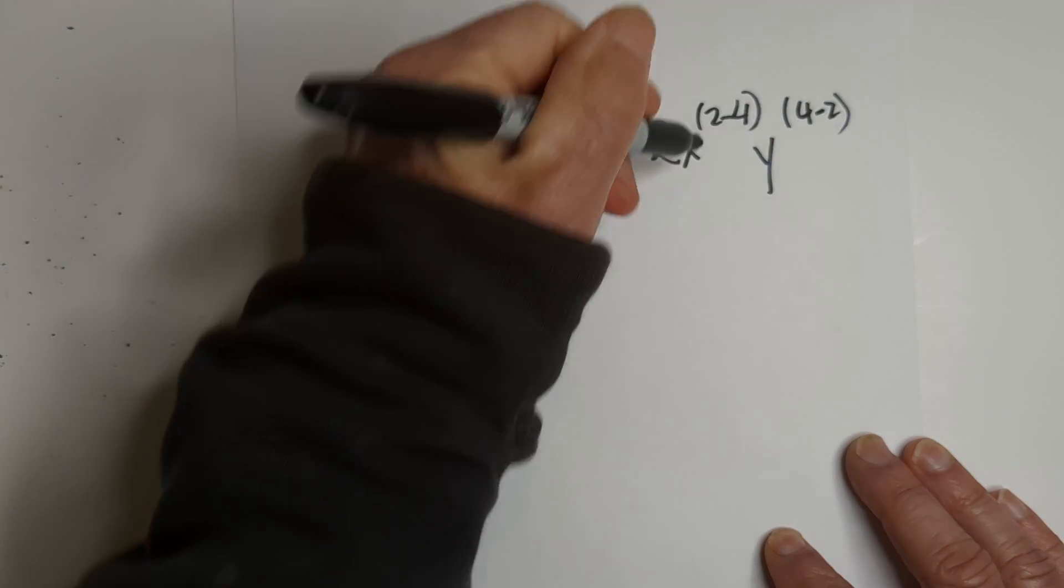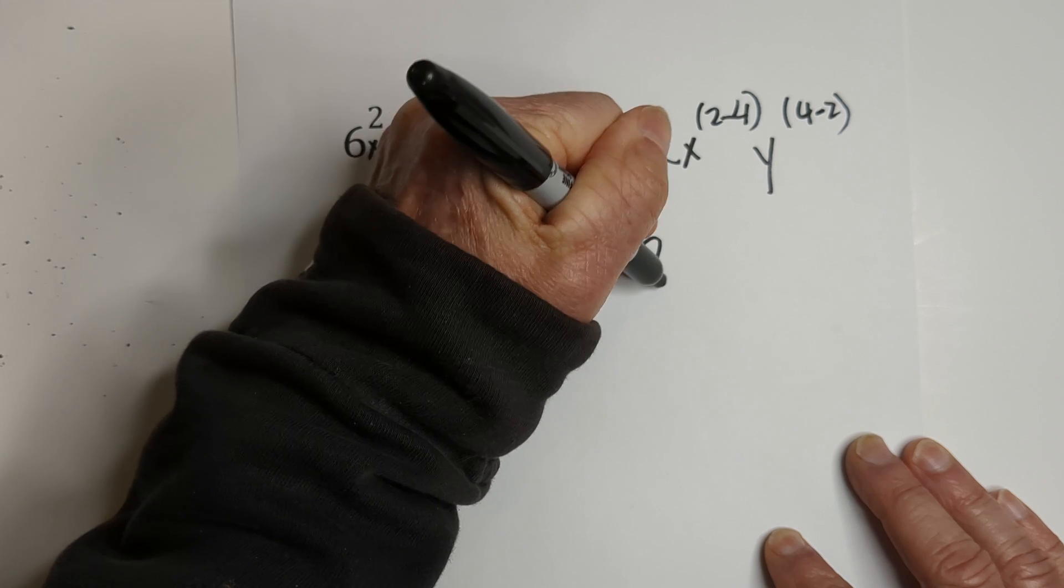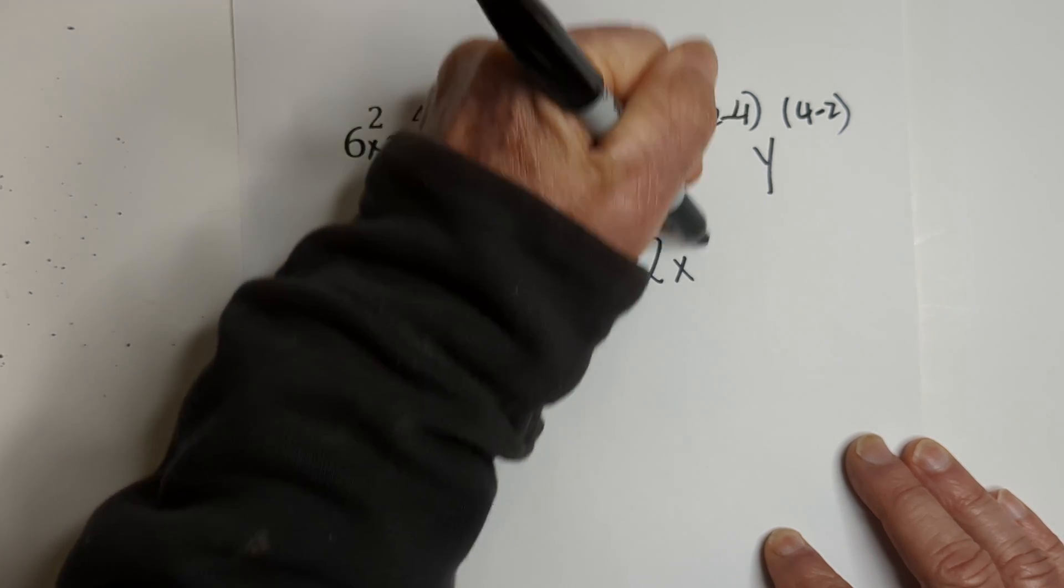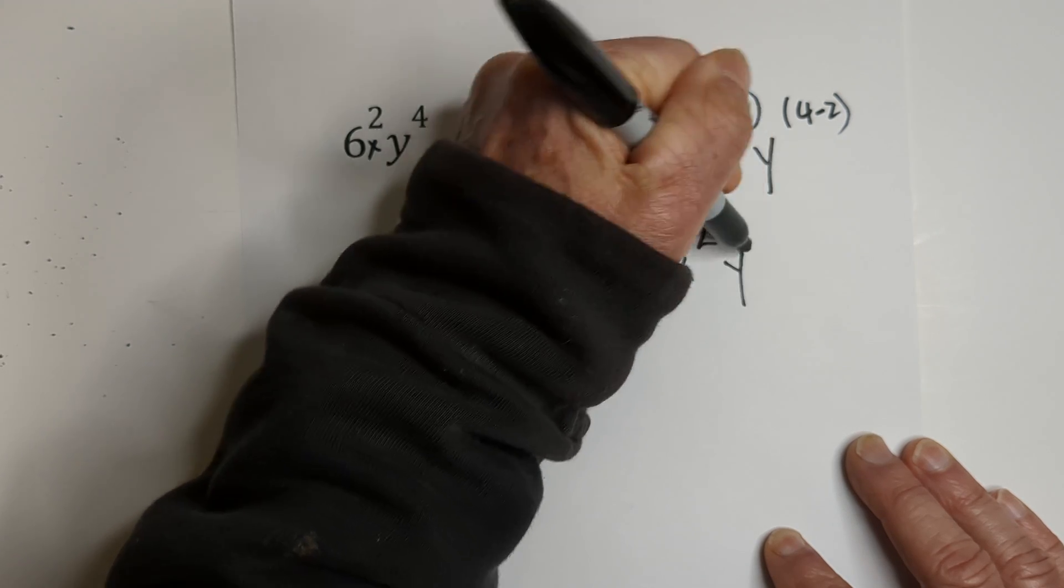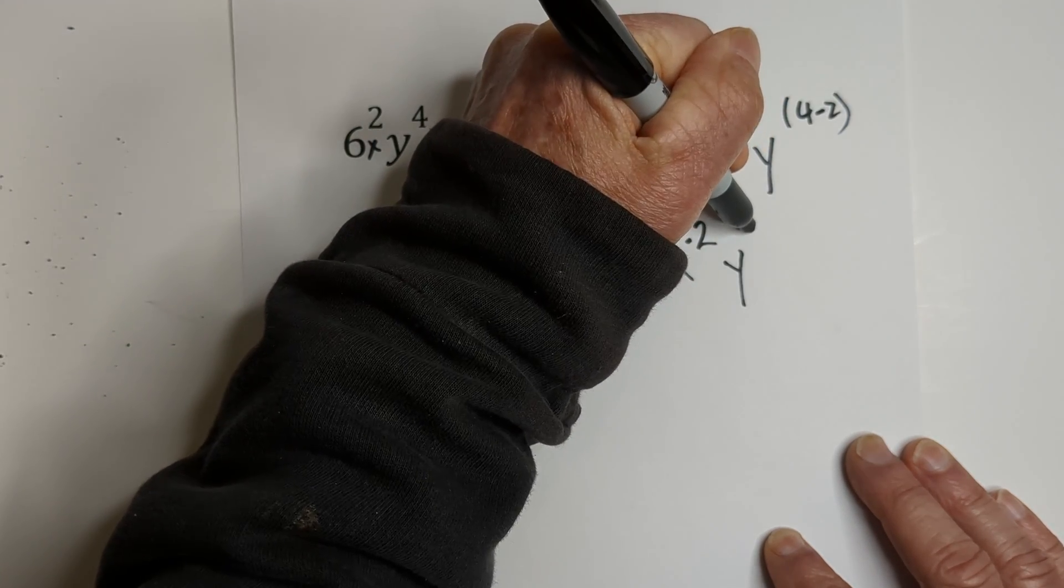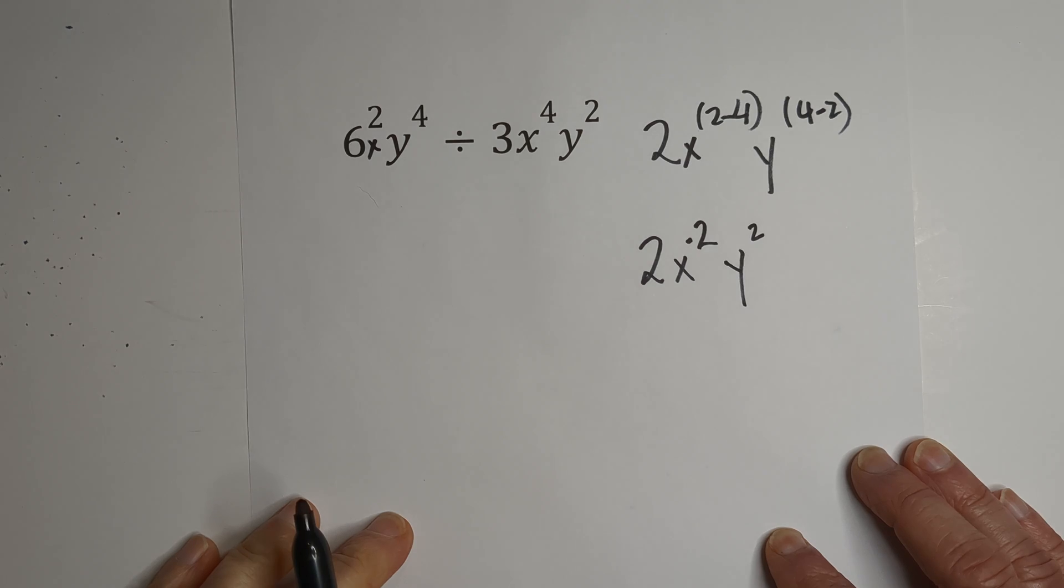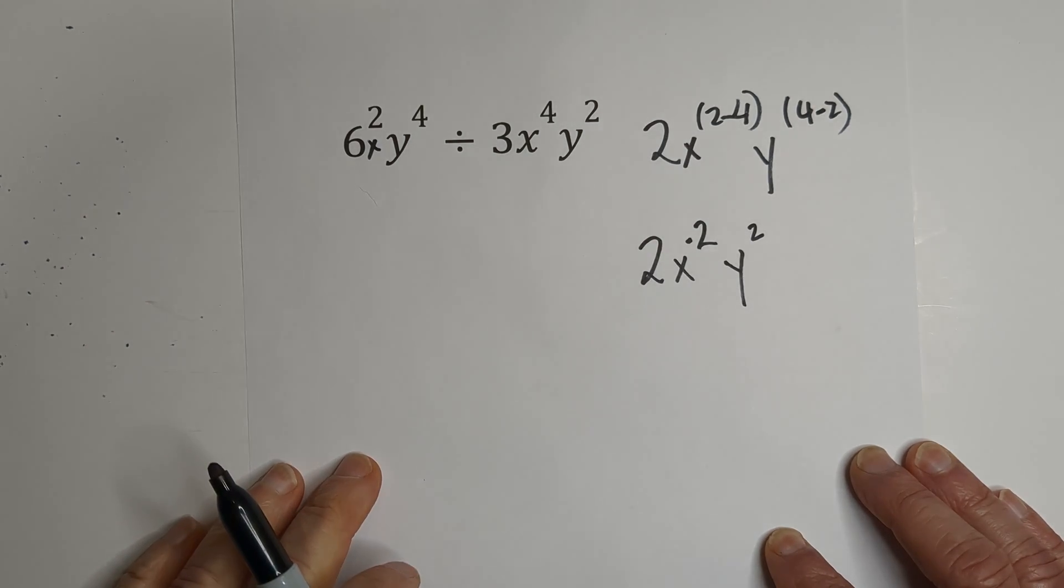Now let's bring this down. So that gives us 2X. 2 minus 4 is negative 2. And then Y, 4 minus 2 is squared.